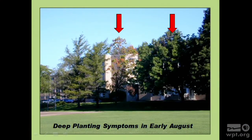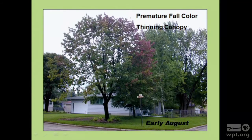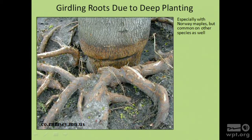Here are some deep planting symptoms. These are the same type of tree planted at the same time—one is really thin and already turning color, while the other is full, lush, and looks as a tree ought to. Another example shows premature fall color and a thinning canopy. If you could see the base of the tree behind the hostas, you would see it goes straight into the ground like a phone pole. The girdling root damage is visible once excavated. The tree's vascular system—which allows water to move from roots to the canopy—is right underneath the bark. When you compress the bark, you damage the vascular system, explaining the dieback, early fall color, and small leaves.